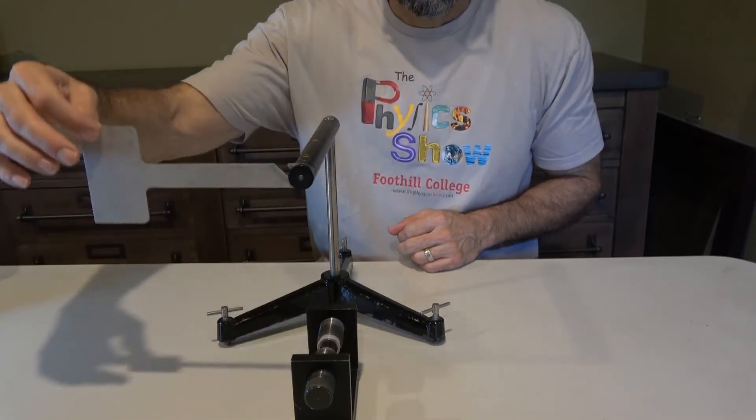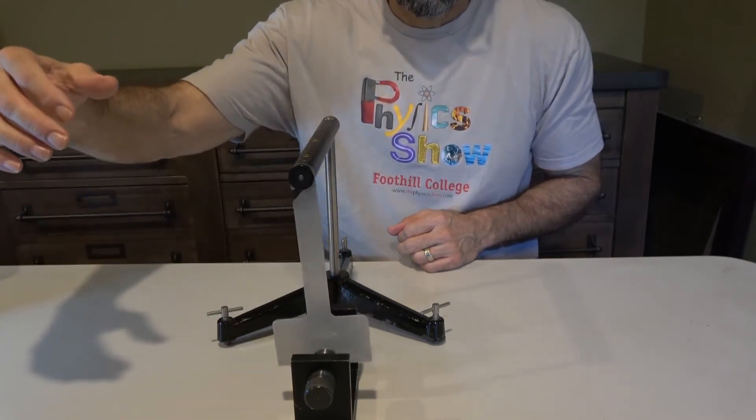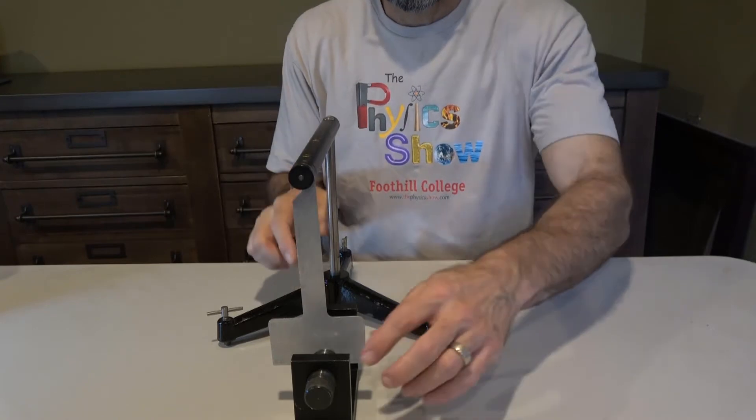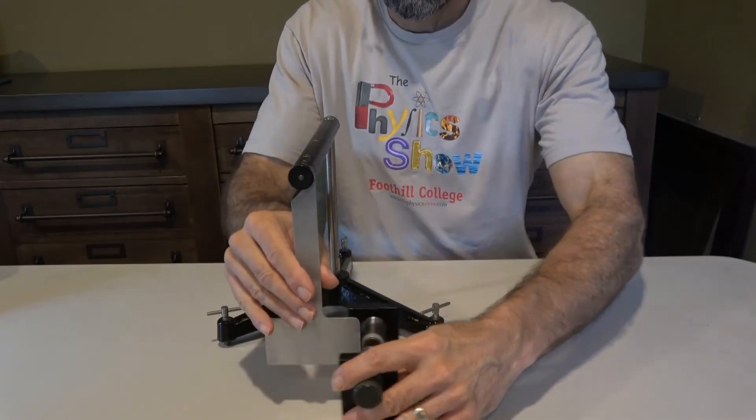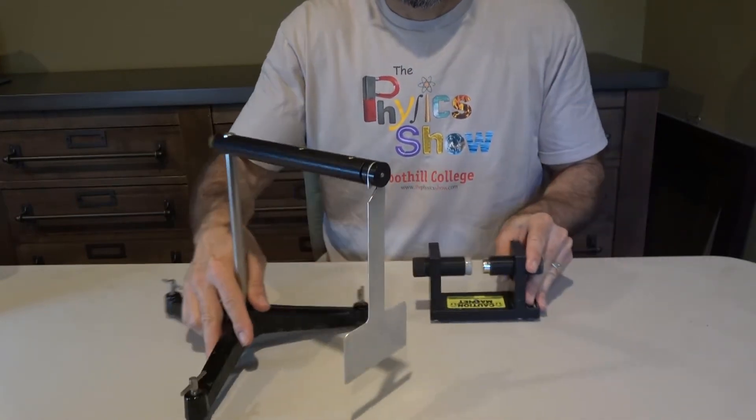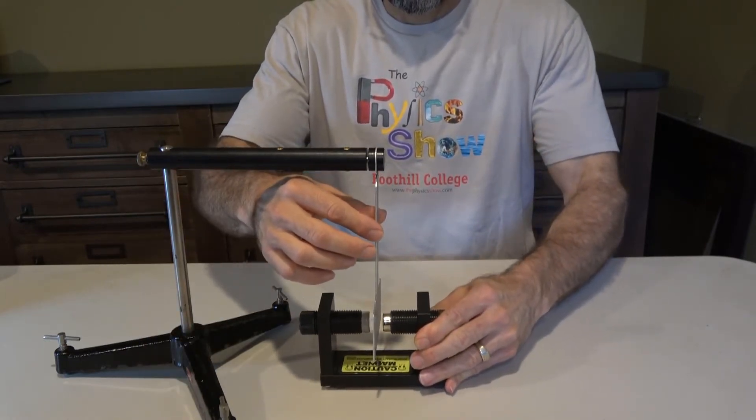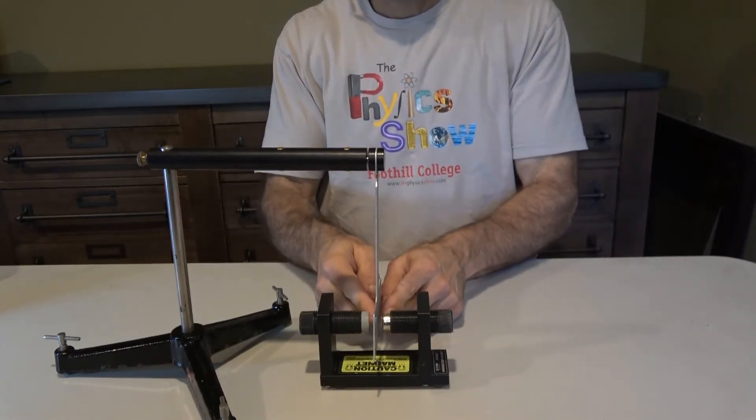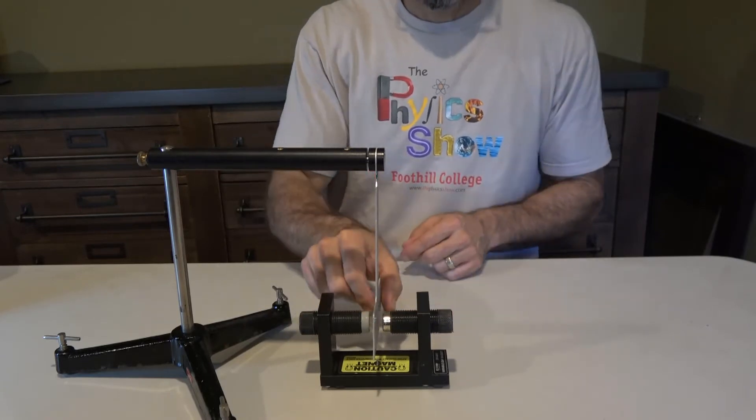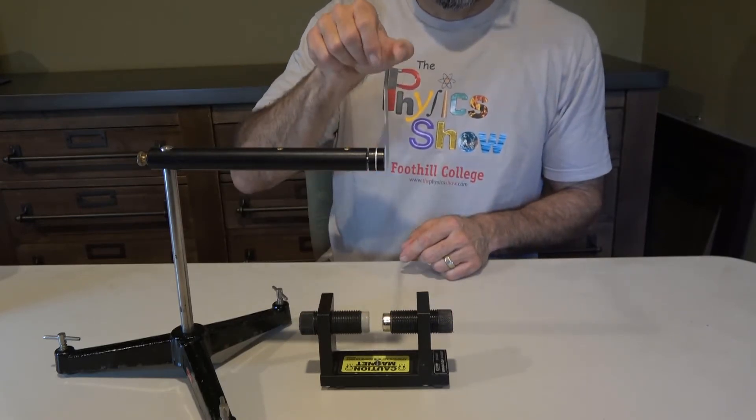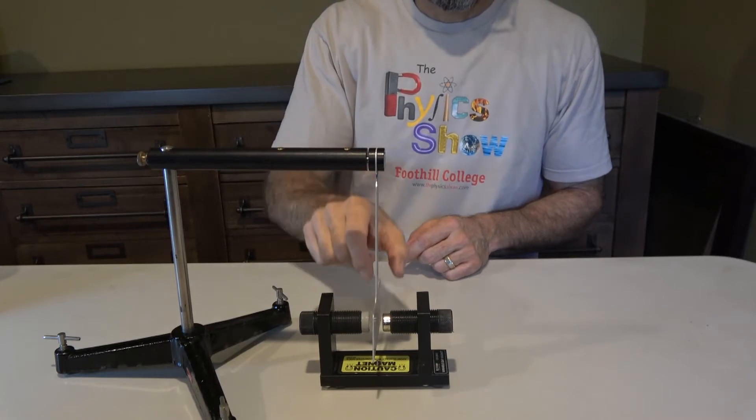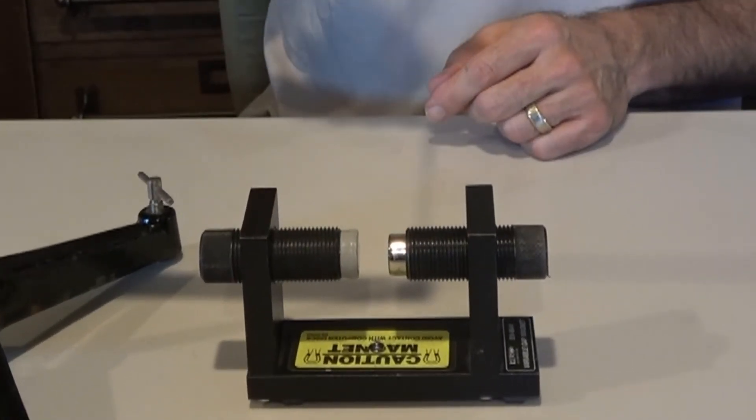Let's watch that one more time. Now let's rotate the setup 90 degrees and take a look from this angle. As you can see, the pendulum swings through without touching the magnet.